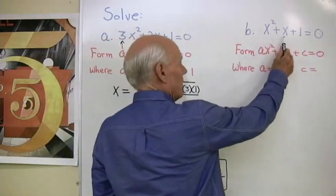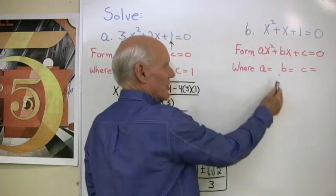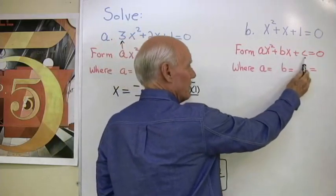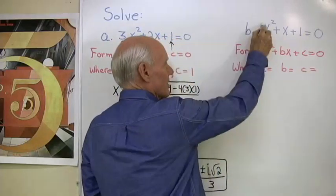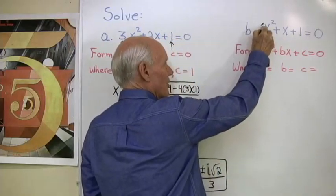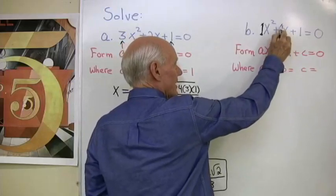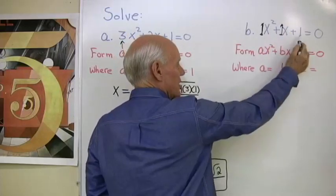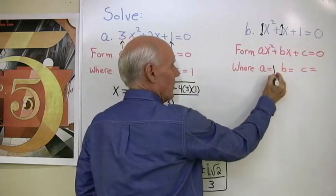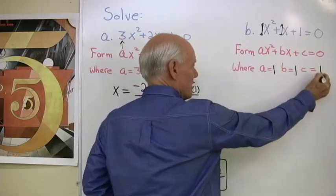Here I have x squared plus x plus 1 is equal to 0. It has the form A x squared plus B x plus C, where A is 1. That's the coefficient of x squared. B is 1. That's the coefficient of x, and C is 1. So A is equal to 1, B is equal to 1, C is equal to 1.